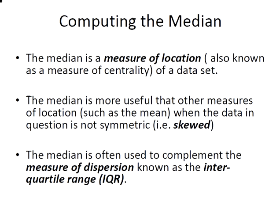Now the median is more useful than other measures of location, one of which is the mean, when the data set is not symmetric. So when we have a skewed data set we would use the median. If we had a symmetric data set we would use the mean.